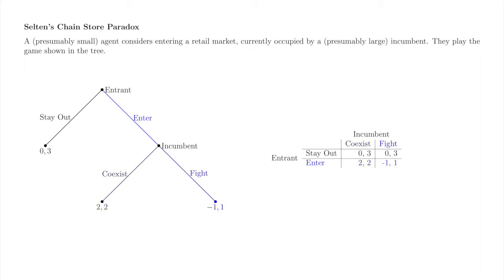Finally, suppose the entrant plays enter and the incumbent plays fight. The induced path of play is that the entrant enters, the incumbent fights, and the game ends. Payoffs are minus 1 to the entrant and 1 to the incumbent.